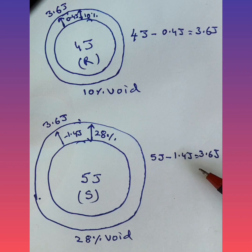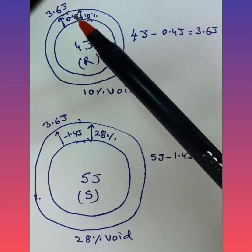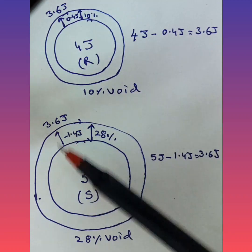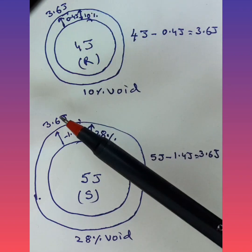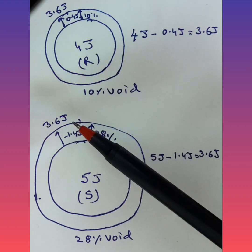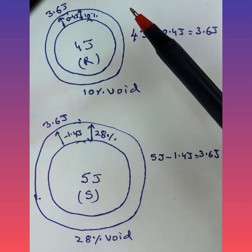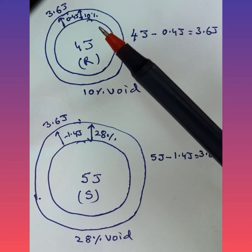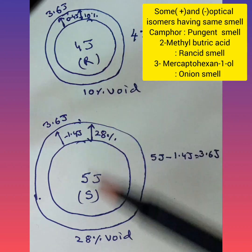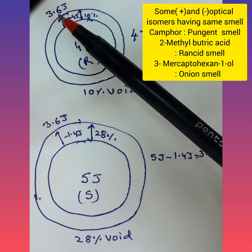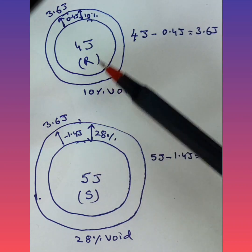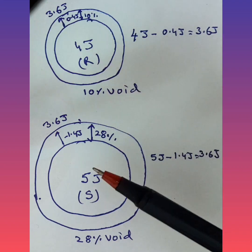In the S enantiomer case, I subtracted 28 percent from 5 joules, which comes to 1.4 joules, so 5 joules minus 1.4 joules gives 3.6 joules. In both cases the result is 3.6 joules. These 3.6 joules are provided to the transducer, which transduces them into an electrical impulse sent to the olfactory nerves, which carry the impulses to the brain for decoding — the result is the same. Both enantiomers generate the same 3.6 joules, the same electrical impulse, and hence the same odor.